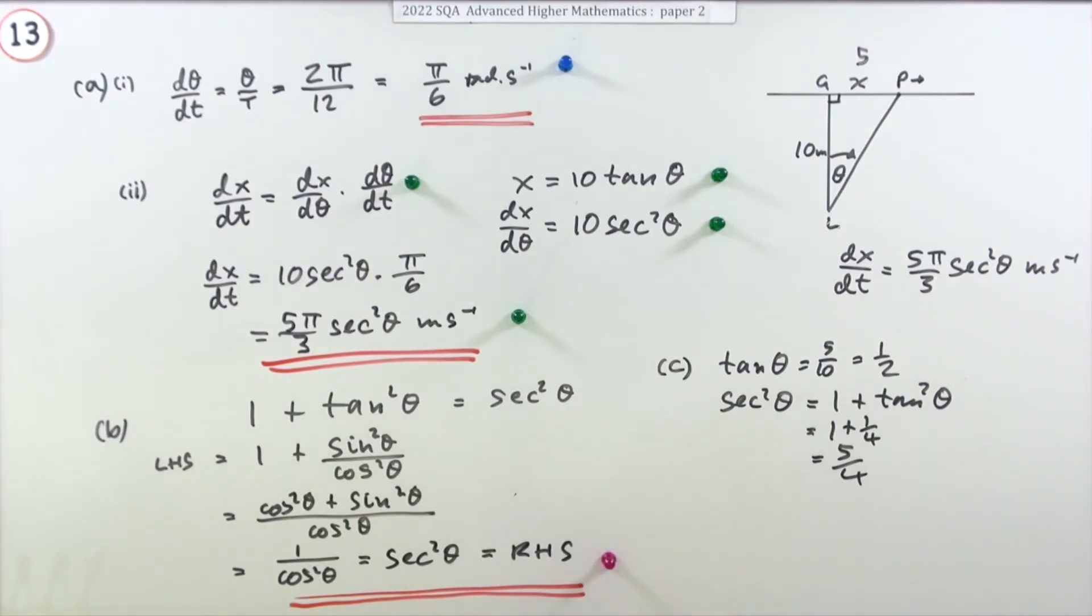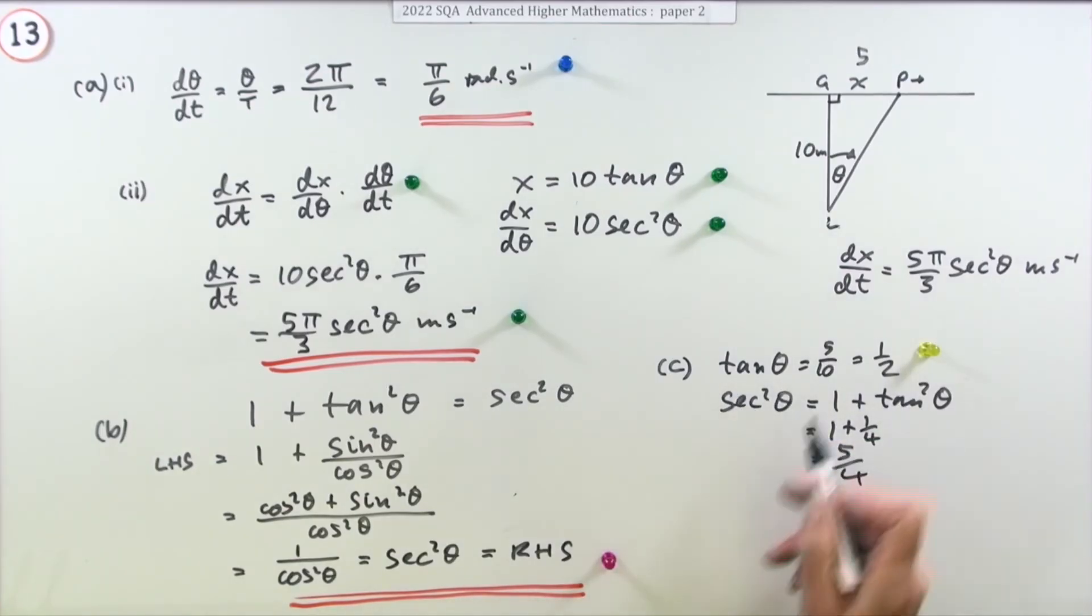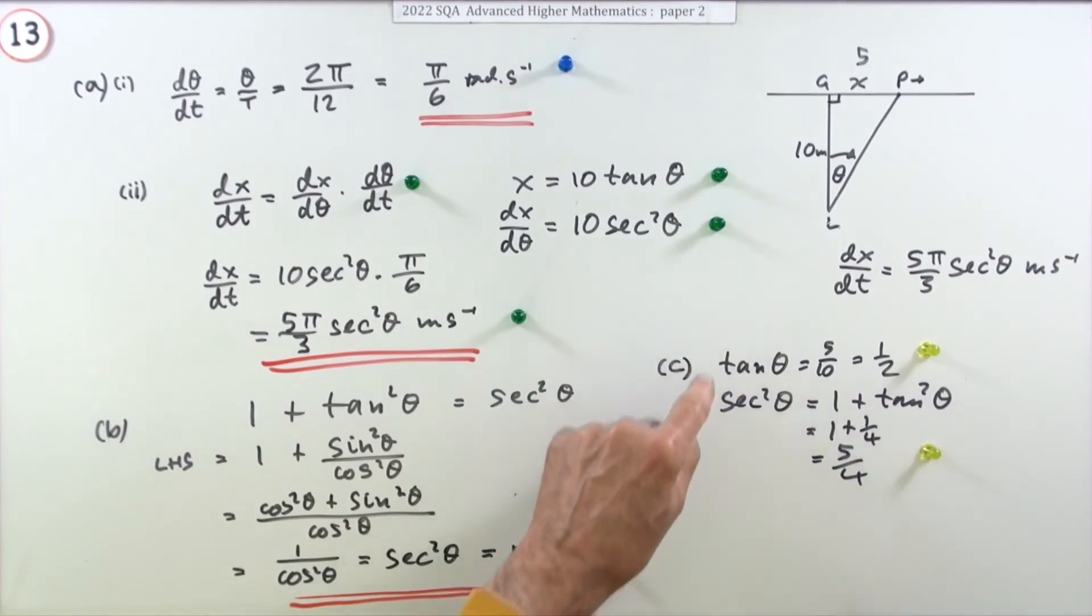Now, that's already 2 marks. You're getting one mark for saying tan θ is 5 upon 10, which comes to a half, and you've got another mark for then finding sec² θ from it using that.